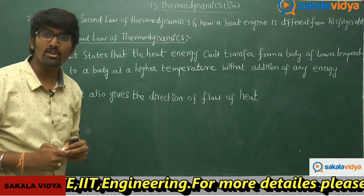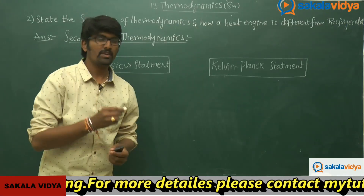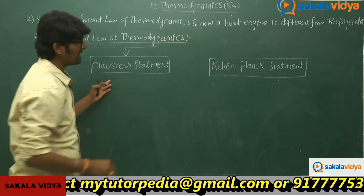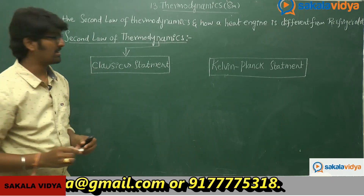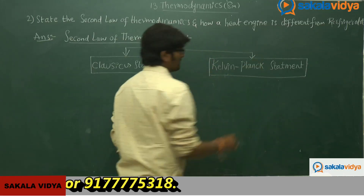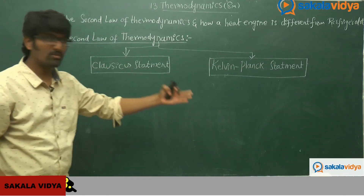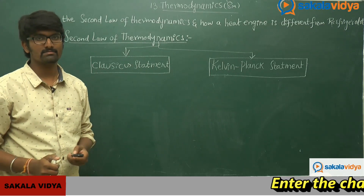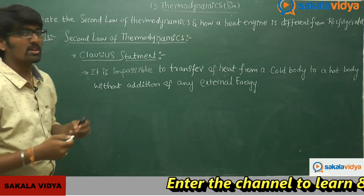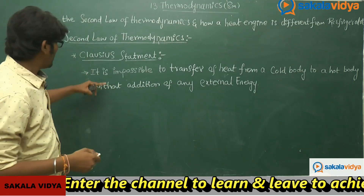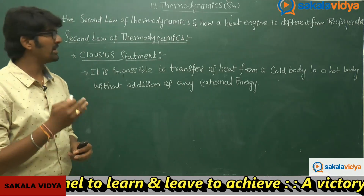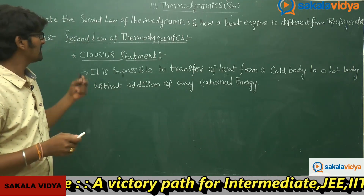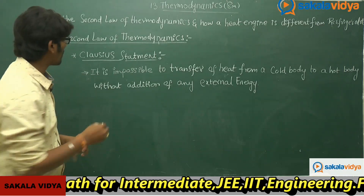We can understand the concept of the second law of thermodynamics based upon two statements: one is the Clausius statement and another is the Kelvin-Planck statement. According to the Clausius statement, it is impossible to transfer heat from a colder body to a hotter body without addition of any external energy from the source.